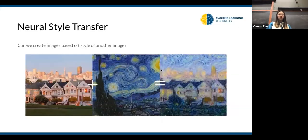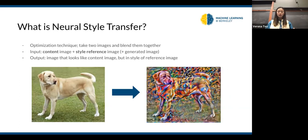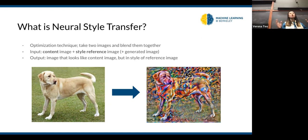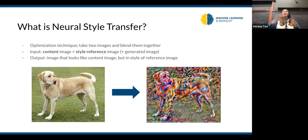I'll talk a bit about neural style transfer. The question is: can we create images based off the style of another image? The answer is yes — we call this neural style transfer. You can think of it as a general optimization technique used to blend two images together. You have three inputs: the content image — the image whose content you want to keep (like a dog) — and a style reference image, which is a separate image you base the style off of, to create what we call the generated image.